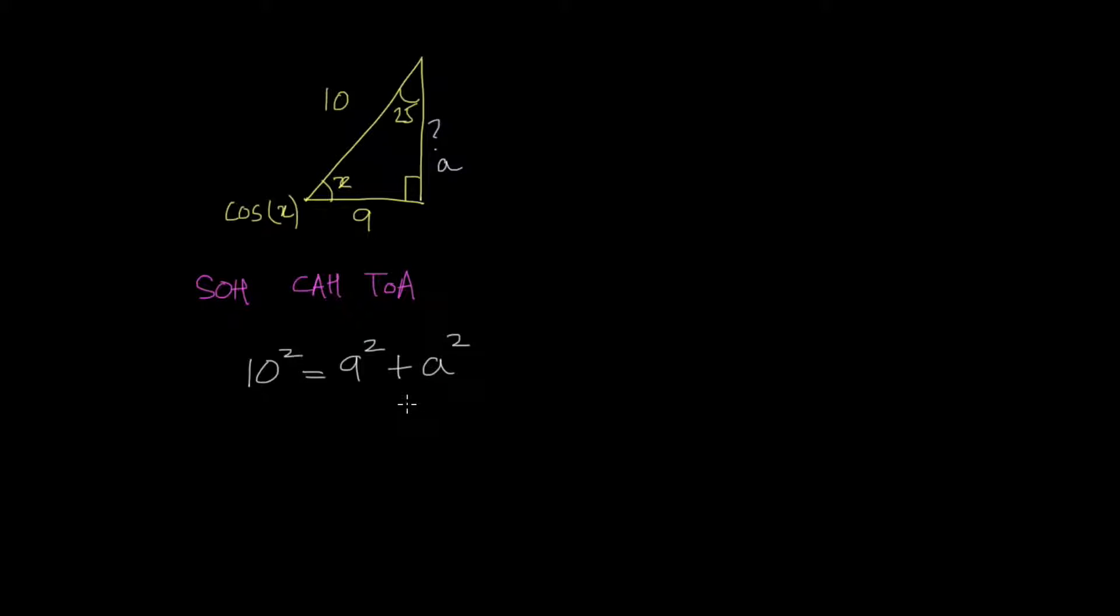Now if I subtract 9 squared from both sides, we have 10 squared minus 9 squared equals a squared. 10 squared is 100, minus 9 squared is 81, equals a squared. 100 minus 81, that leaves me with 19 equals a squared. So my a, if I take the square roots of both sides, a equals the square root of 19. So I can put that down here, square root of 19.